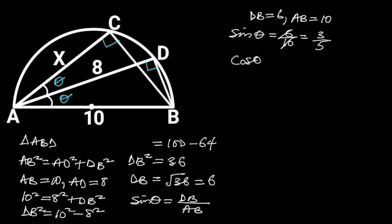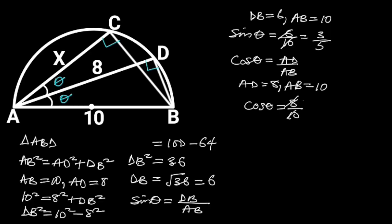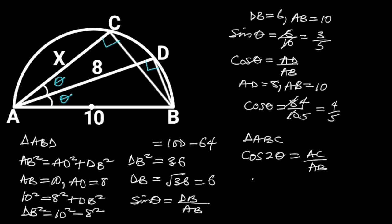Cos theta is equal to AD over AB. AD is equal to 8, so cos theta is equal to 8 over 10, which is equal to 4 over 5. Next, let's focus on triangle ABC. From the trigonometric ratio, cos 2 theta is equal to AC over AB. AC is equal to X and AB is equal to 10, so cos 2 theta is equal to X over 10.